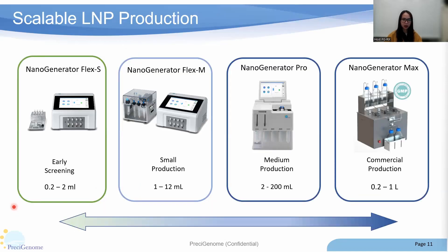Next, let's look at the scalability of the Pro system. PC Genome provides a full-range production line for different research and development stages. Nanogenerator Flex S has a throughput from 200 to 500 microliters, suitable for in vitro cell studies or formulation screening. Nanogenerator Flex M has a throughput from 1 to 12 mL, designed for small-scale production for animal studies. Nanogenerator Pro has a throughput from 2 to 200 mL, covering application scenarios from small batch synthesis to pre-clinical production.